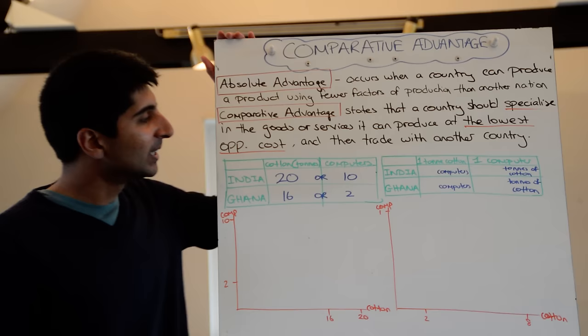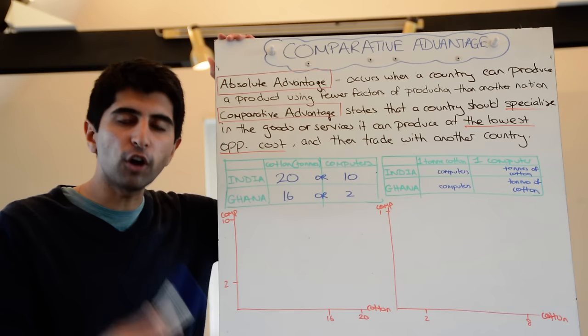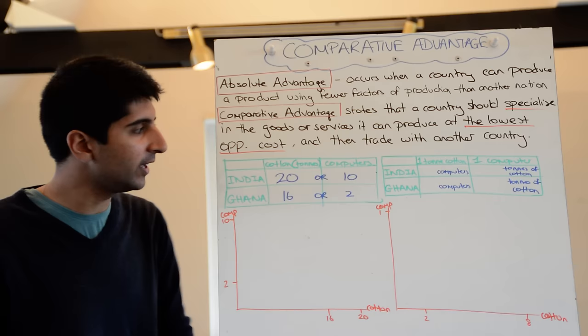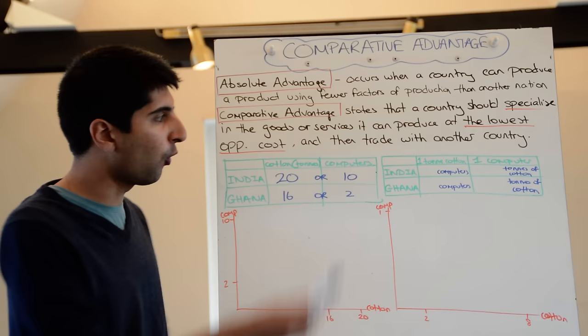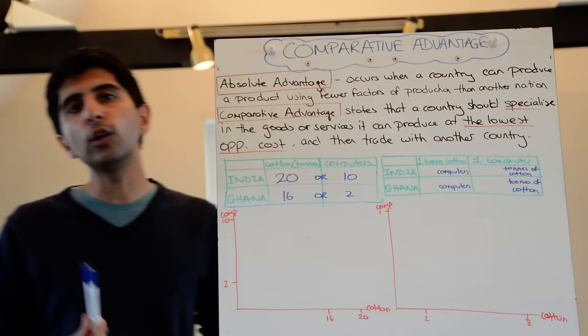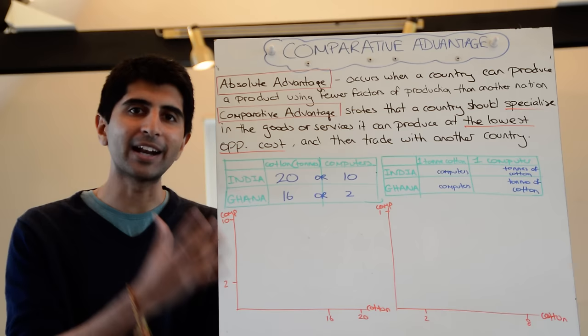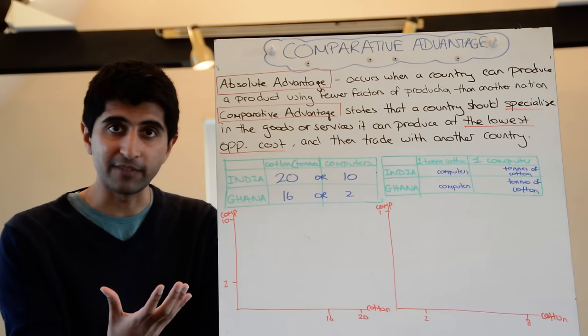Let's assume there is only India and Ghana and they can produce either cotton or computers. Using the same factors of production — exactly the same quantity and quality — India can produce either 20 tonnes of cotton or 10 computers. Ghana can produce either 16 tonnes of cotton or 2 computers. Using the law of absolute advantage, it's clear to see that India has the absolute advantage in producing both computers and cotton — they can produce more, they're more efficient with the same factors of production.